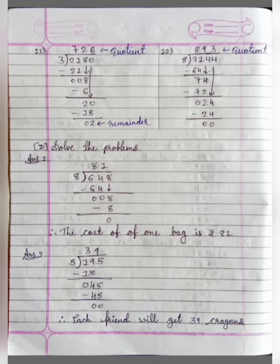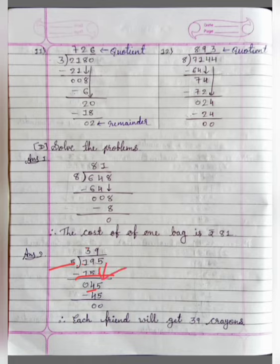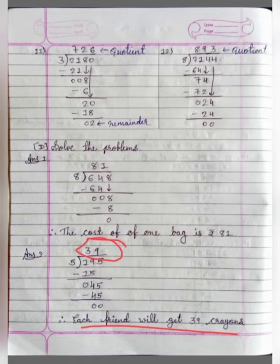Number 2: My mother distributed 195 crayons equally among 5 friends. How many crayons did each of my friends get? Here we will divide 195 by 5. 5 threes are 15. 19 minus 15 is equal to 4. We will bring down this 5 here. 5 nines are 45. 45 minus 45 is equal to 0. So each friend will get 39 crayons, because our quotient is 39.